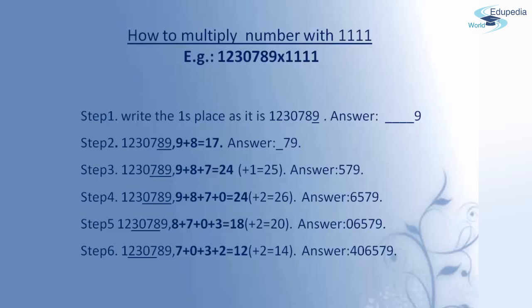Here I add the 4 digits in hundreds place, thousands place, ten-thousands place and lakhs place — that is 7, 0, 3 and 2. I get the sum 12. Adding carry of 2 gives 14. Since 14 is a two-digit number, 4 is written in the answer and 1 is taken as carry. In the answer, I now have 4, 0, 6, 5, 7 and 9.